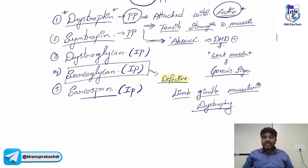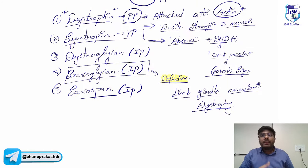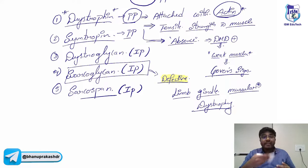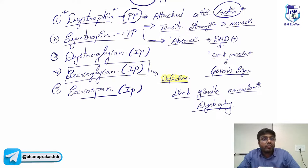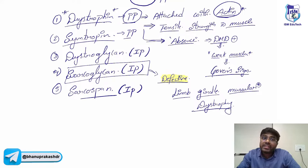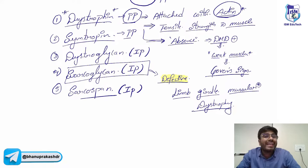At the end of the day: the proteins present in the muscle membrane are dystrophin, syntrophin, dystroglycan, sarcoglycan, and sarcospan. Dystrophin and syntrophin are peripheral proteins; all others are integral proteins.